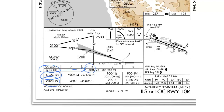At 480 feet, if you don't have the runway environment or any other required item in sight, you must execute a missed approach. Next, you have the minimum visibility data. In this case, it's 2,400 feet RVR — runway visual range — or one half statute mile, which is the equivalent. Most ATISs will report in statute miles instead of RVR, unless the airport feels it necessary to use RVR values due to deteriorating visibility.